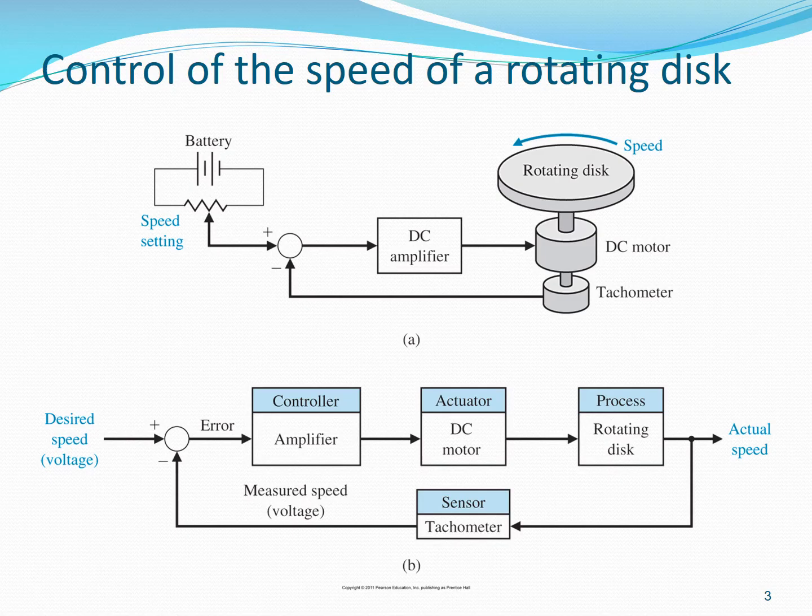The upper diagram shows a physical system consisting of a rotating disc — we want to control the speed of the disc. The process to be controlled is the rotating disc. The output is the variable to be controlled, which in this case is the angular speed of the disc. The sensor used to measure the speed is a tachometer.